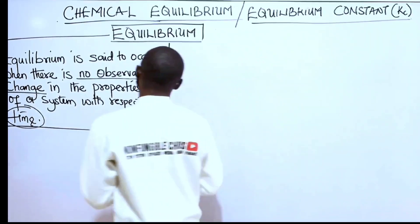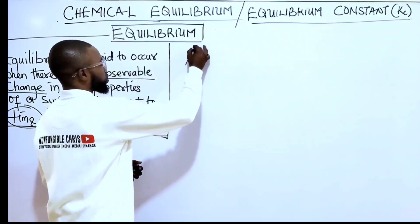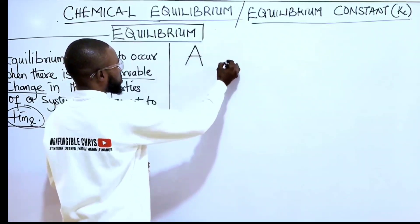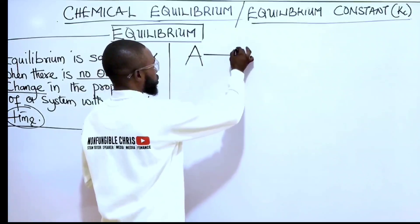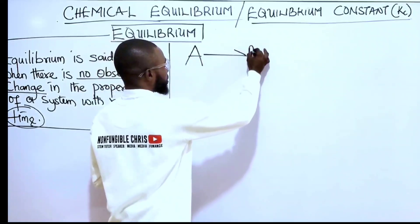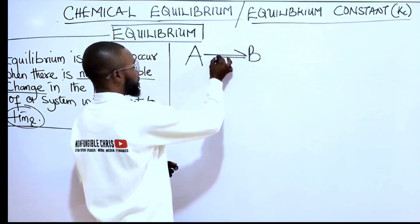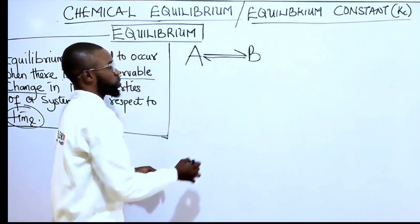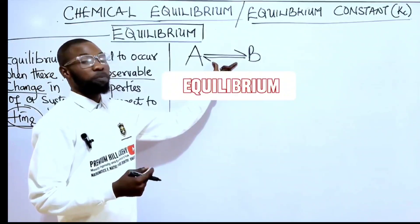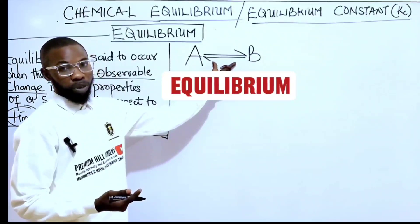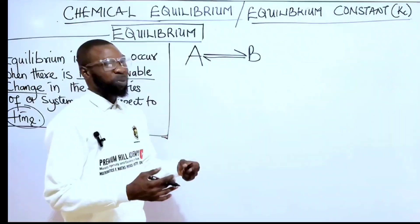Let me explain. Let's assume we have a reversible reaction — a typical reversible reaction where A can be converted to B and B can also be converted to A. When we see symbols like these, they depict equilibrium, meaning there is no change in the system.